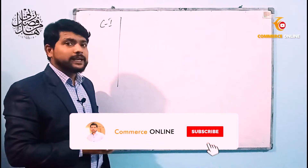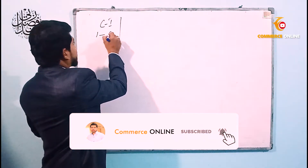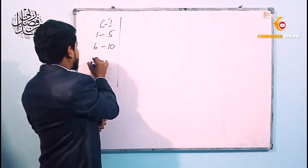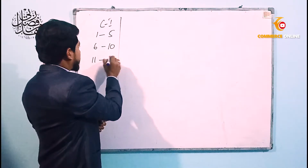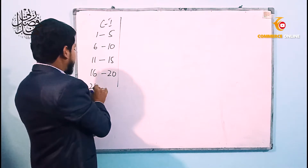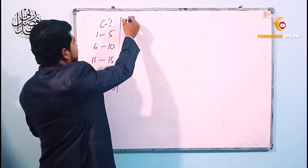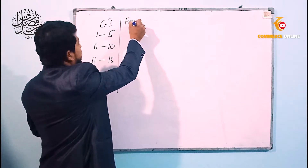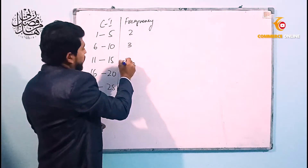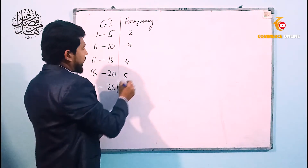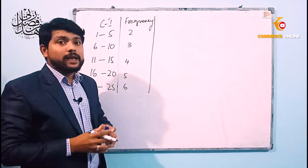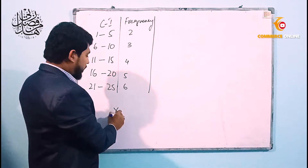तो चलिए सबसे पहले question बनाते हैं। Question में आपके पास class interval है: 1 to 5, 6 to 10, 11 to 15, 16 to 20, and 21 to 25. इसके बाद आपके पास frequency है: 2, 3, 4, 5, and 6. यहां आपको calculate करना है mean, और mean का formula है आपके पास...